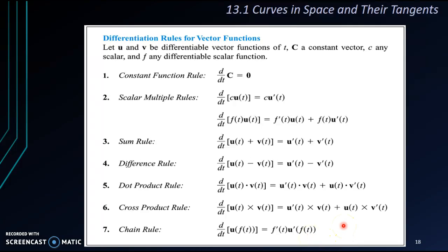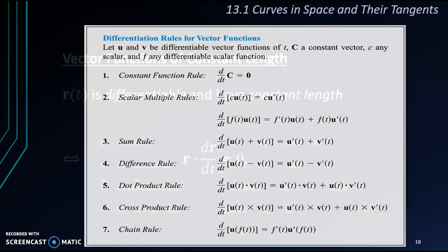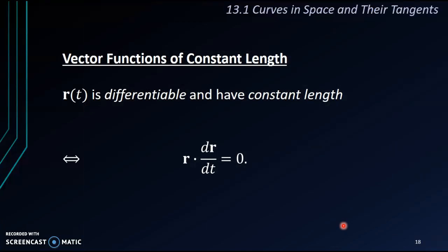Besides all these differentiation rules, we also have a theorem saying that if we have a vector function that is differentiable and it has a constant length, then the dot product between itself and its derivative will become 0. Same goes to the inverse.